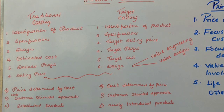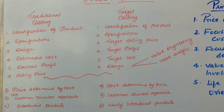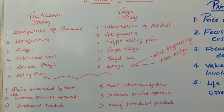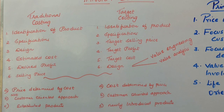The target selling price is set at the price customers are ready to buy the product. Once the target selling price is decided, the company determines its target profit. Keep in mind: the company, while deciding the target profit, should think of the long run — that it will survive and produce the product for a long duration. So on the basis of the long run, the target profit is decided.